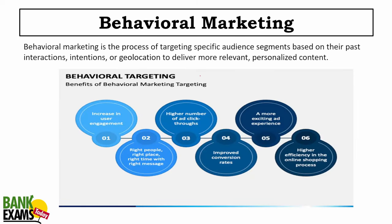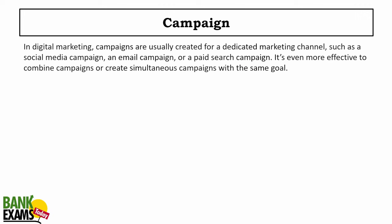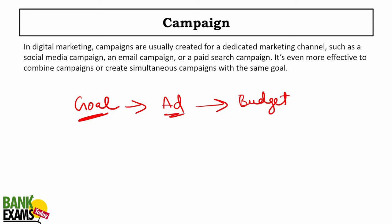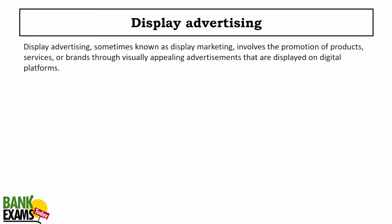Behavioral marketing targets specific audience segments based on past interactions, intentions, and geolocations to deliver more relevant and personalized content — this is why you see relevant ads for whatever you search for. A campaign in digital marketing is when you have a goal, create an ad for that goal, set a budget, and run it on platforms like Google Ads or Facebook Ads. Display advertising uses banners or videos to promote products.